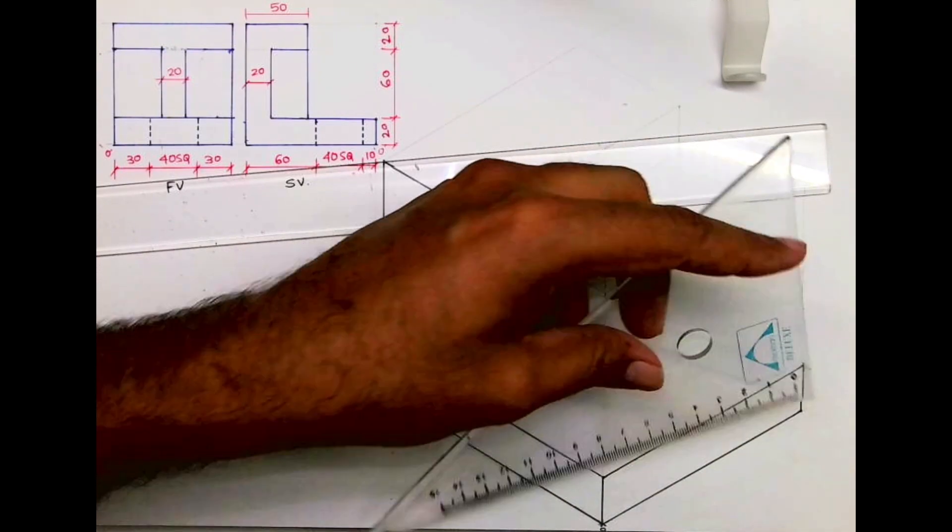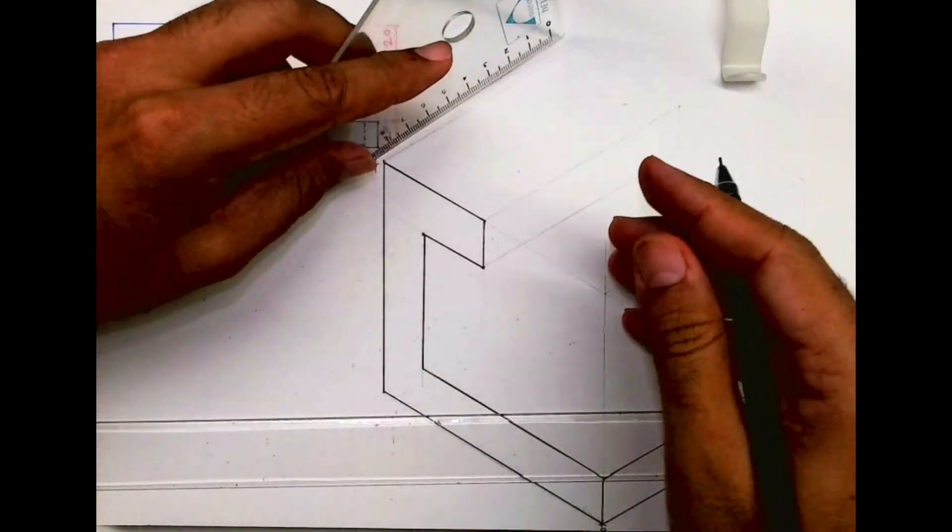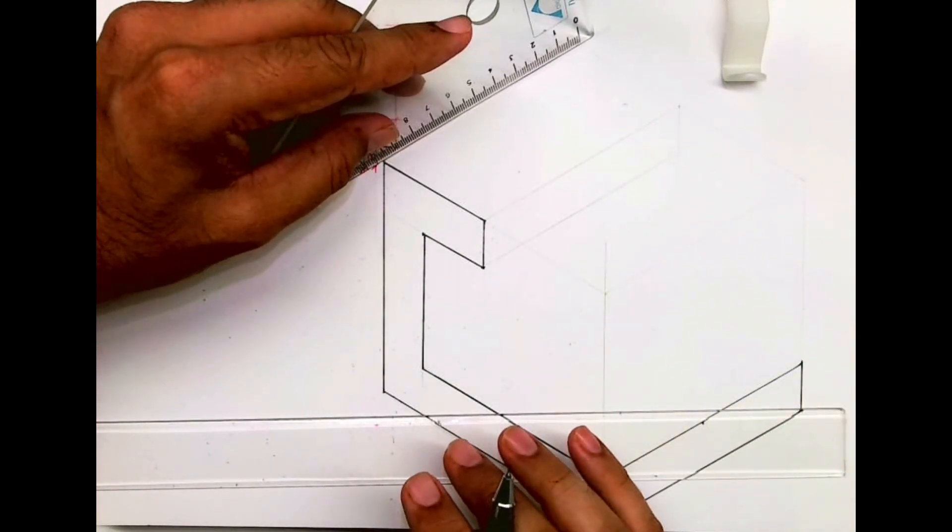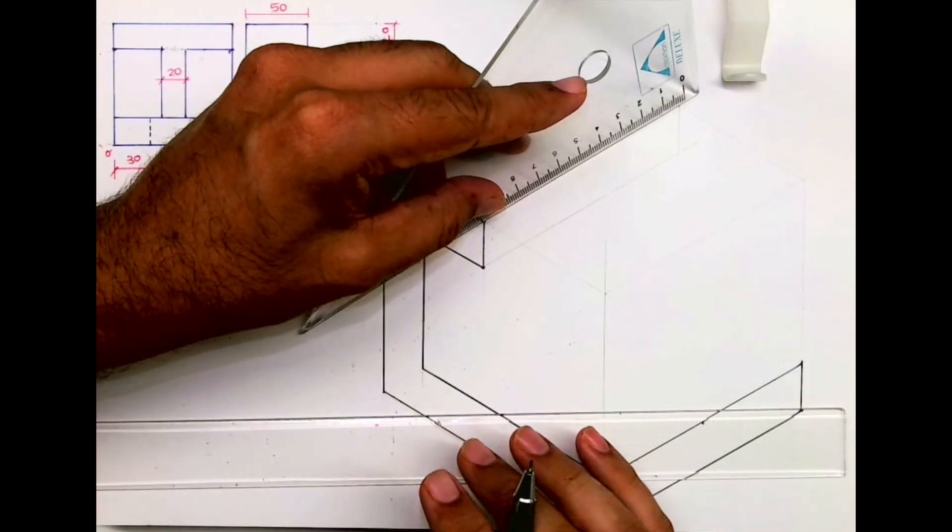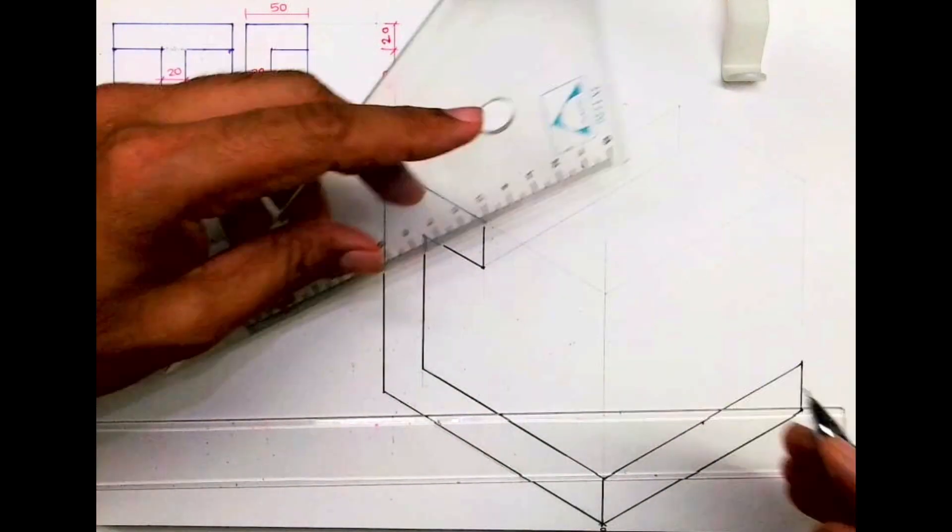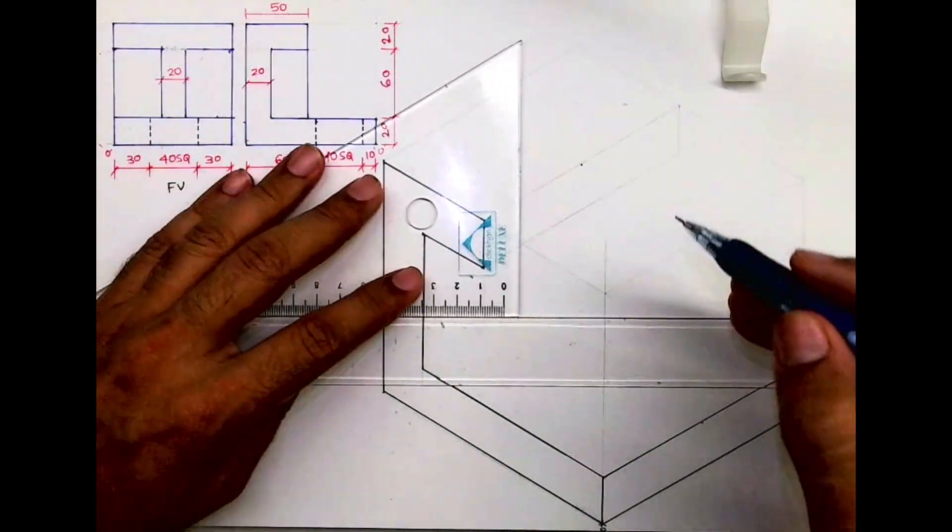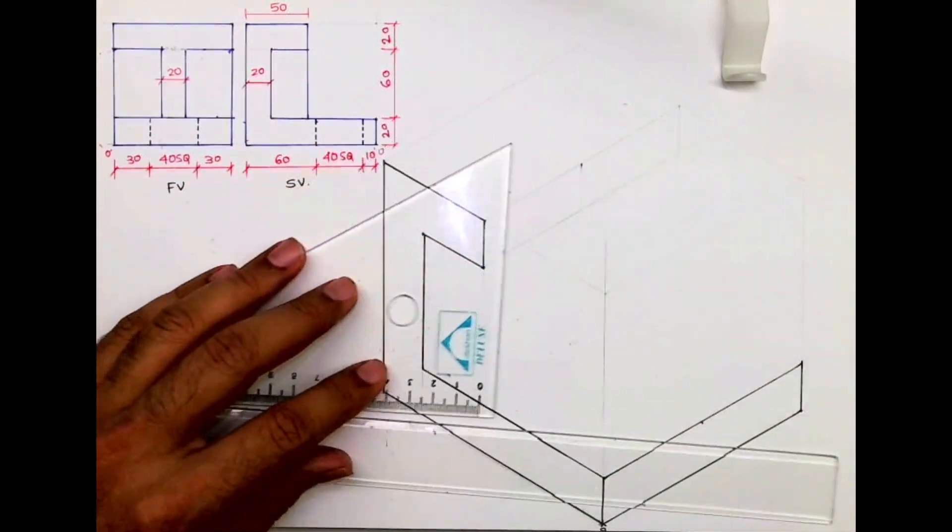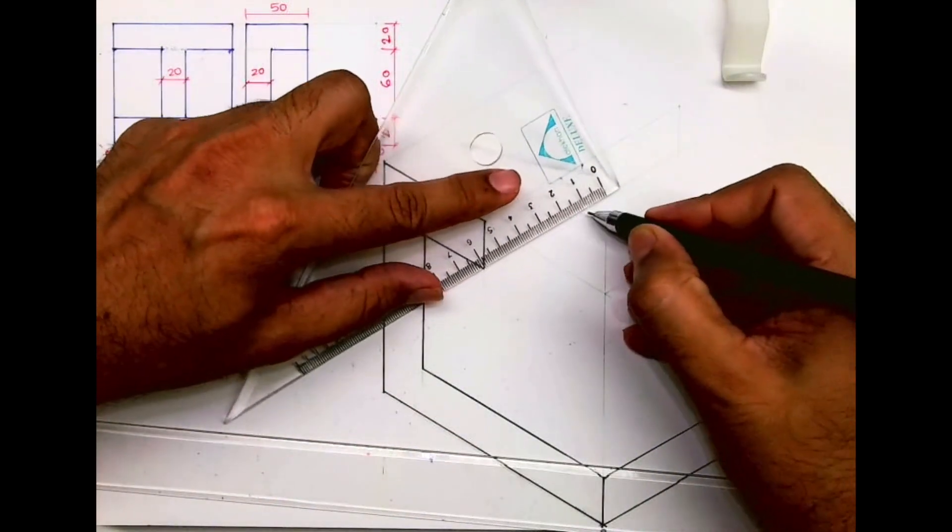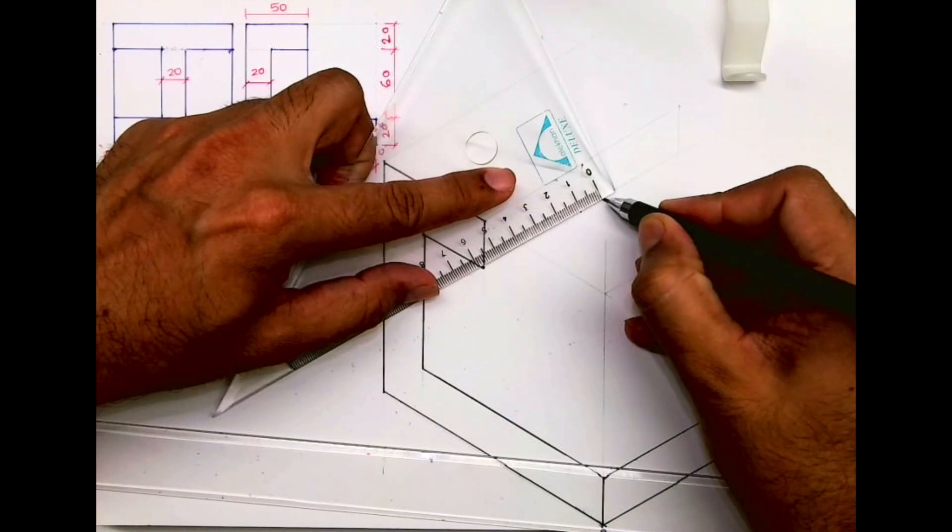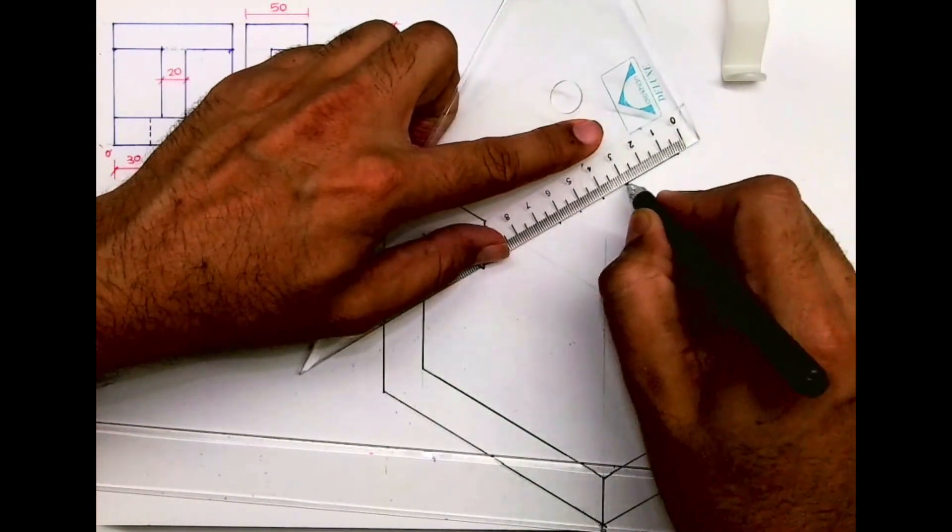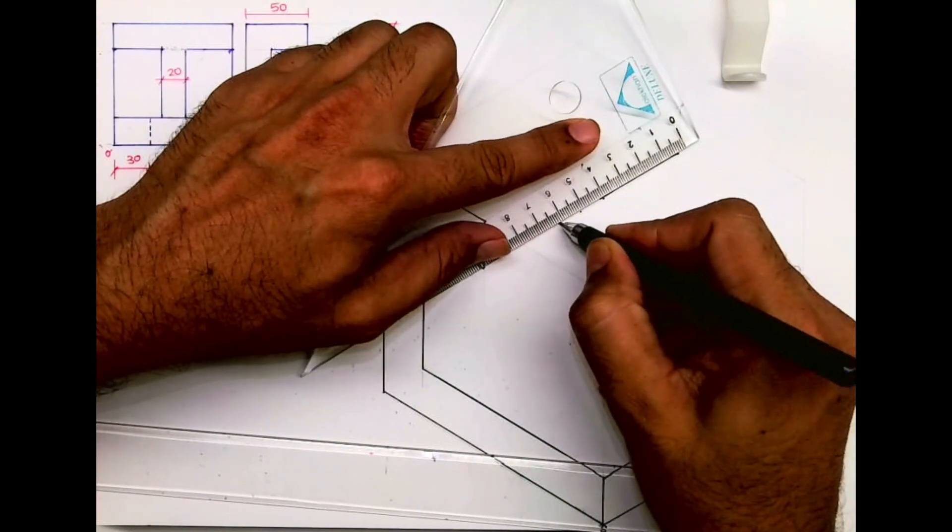So I am marking midpoint. Same way, midpoint of this 100, and I will mark 10, 10 on both the side. Then these lines will be dark.